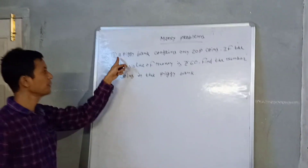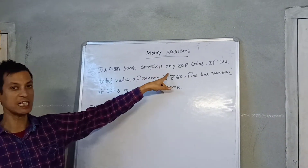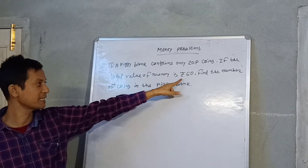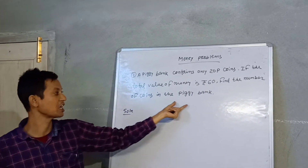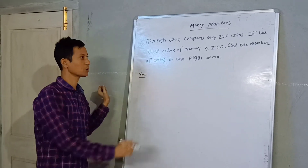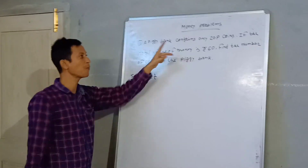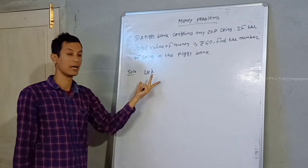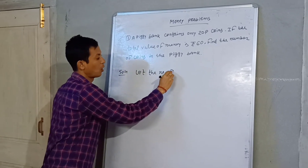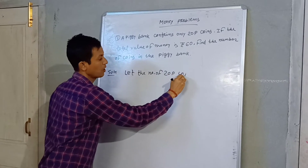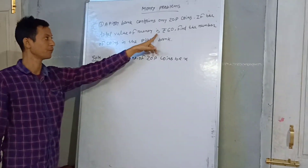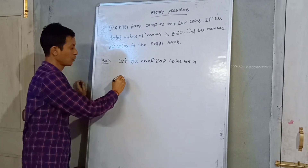Problem one: A piggy bank contains only 20 paisa coins. If the total value of money is rupees 60, find the number of coins in the piggy bank. So let the number of 20 paisa coins be x.